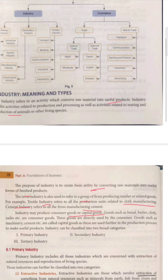Industry may produce consumer goods or capital goods. Consumer goods are those we directly use in our household for personal use — such as bread, butter, clothes, and radio. Capital goods such as machinery and cement are used further in production. A factory brings in machinery so it can do further production — that is capital goods, which are not used at home but used in the factory to make further useful products.